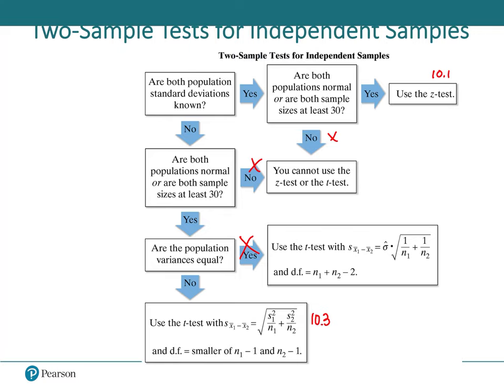Decision flowchart: if both population standard deviations are known and samples are large or normal, use section 10.1 (z-test). If standard deviations are unknown, use section 10.3 (t-test) with df = smaller of n₁-1 or n₂-1. Unequal variances is always the safe default; section 10.2 (equal variances) is not covered.